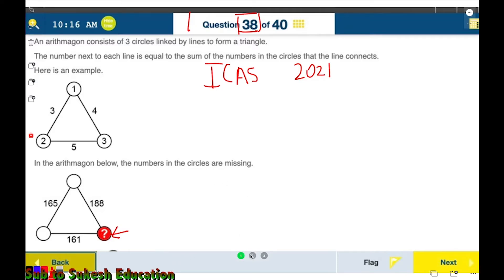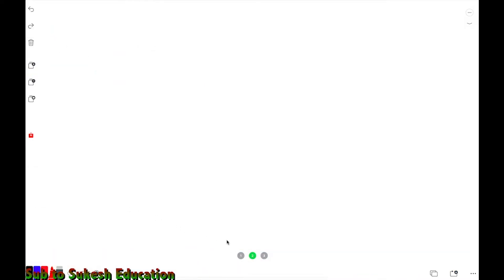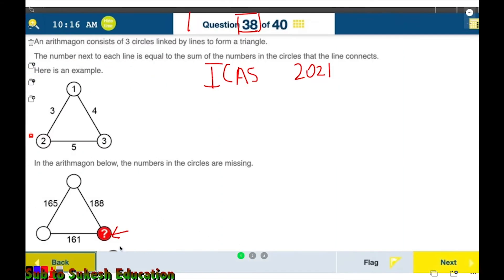For a question like this one, let's take this to be y, this to be x, and this to be z. Now we know the properties: x plus y equals 161, y plus z equals 188, and z plus x equals 165.